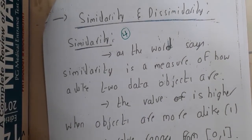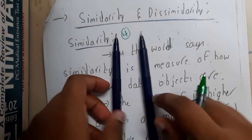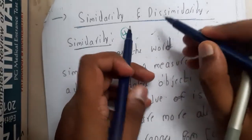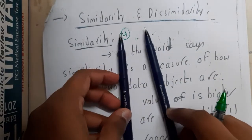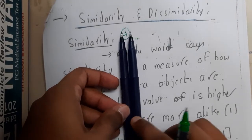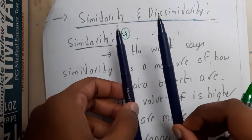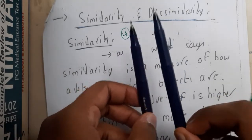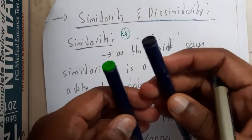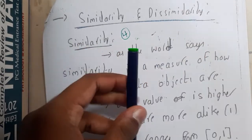Let me ask you one thing — do these two pens look similar or not? Don't judge by color; one is black and one is green. They both look the same because they are from the same company and are designed to look similar. Whenever you want to calculate the similarity value it will be greater. If we check for dissimilarities, we have a color dissimilarity here — one is green and one is black.